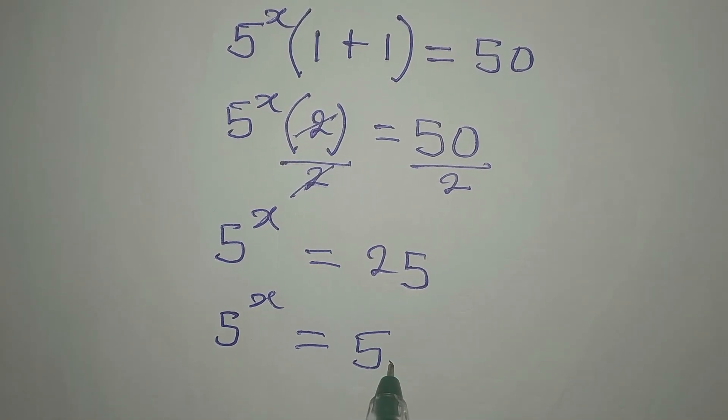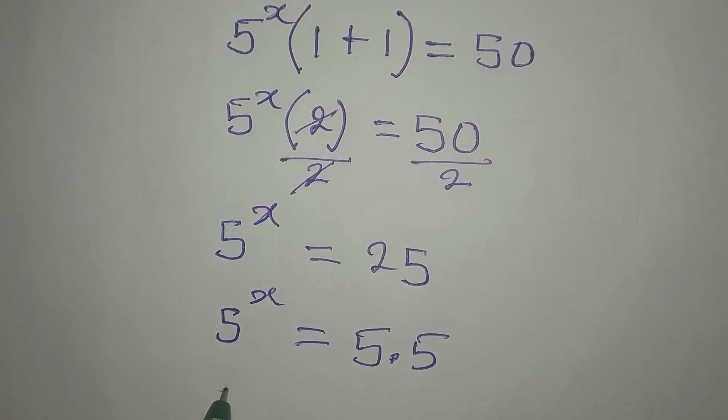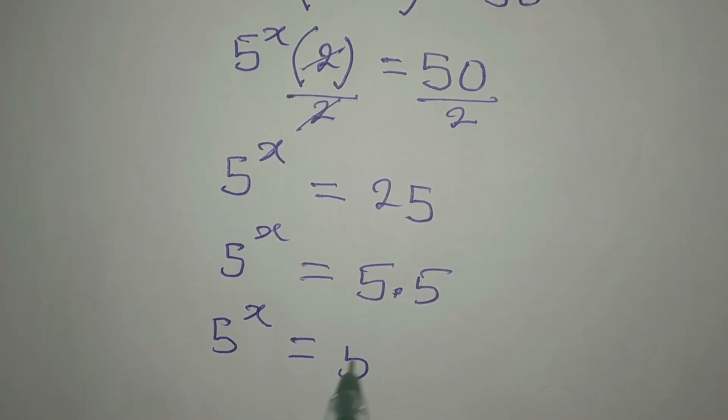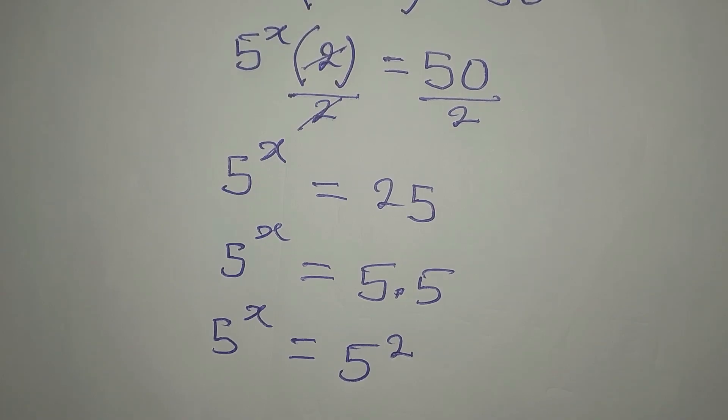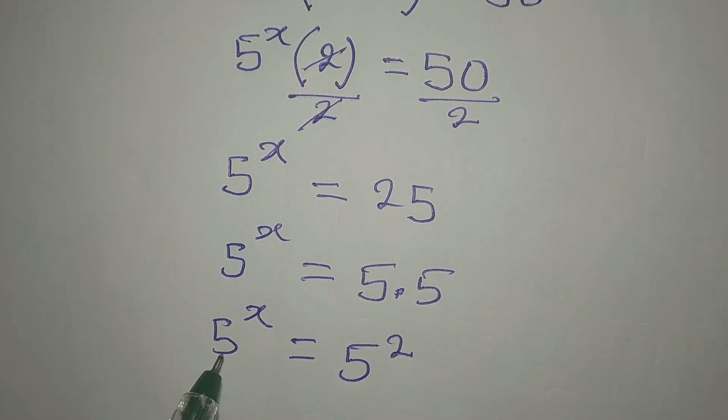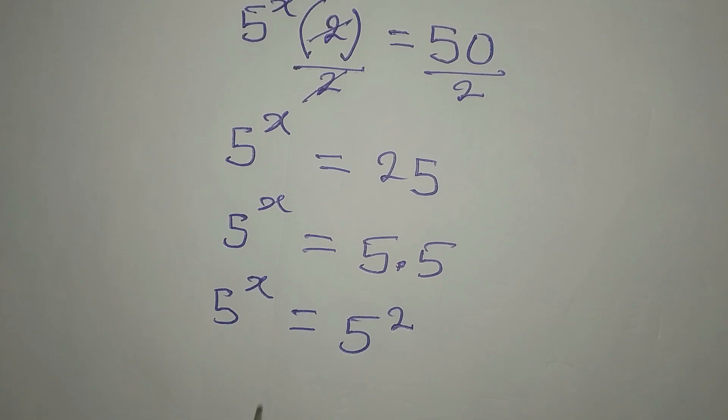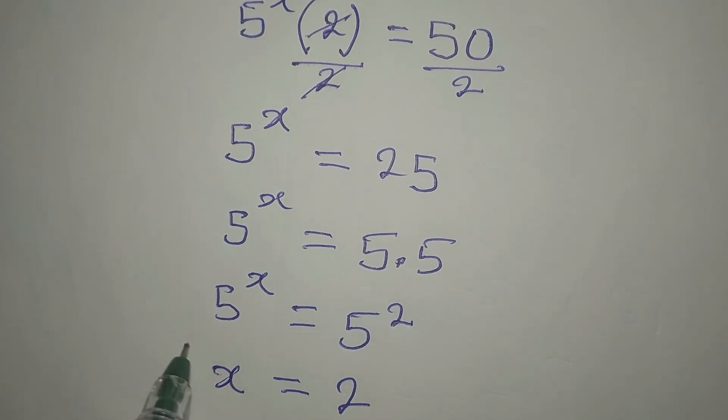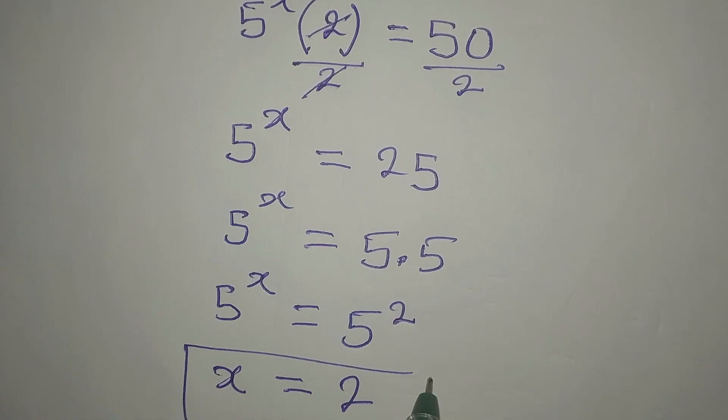So when we have 5 to the power of x, on the other side we're going to have 5 times 5. So now 5 to the power of x is equal to 5 to the power of 2. What we have done is equate the bases, so what happens to the power should also be equal. X is equal to 2.